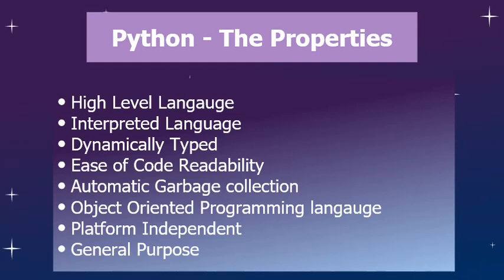Python supports one of the best programming aspects, which is object-oriented programming. In Python you can use object-oriented programming properties like abstraction, encapsulation, inheritance, and polymorphism. We will talk deeply about this later in the series.